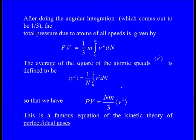After doing the angular integration, which comes out to be one third, the total pressure due to atoms of all speed ranges from 0 to infinity is given by P times V equals one third, which is due to the angular integration from 0 to 2π dφ, 0 to π/2 cos² θ sin θ dθ divided by 2π. This comes out to be one third m ∫₀^∞ V² dn.